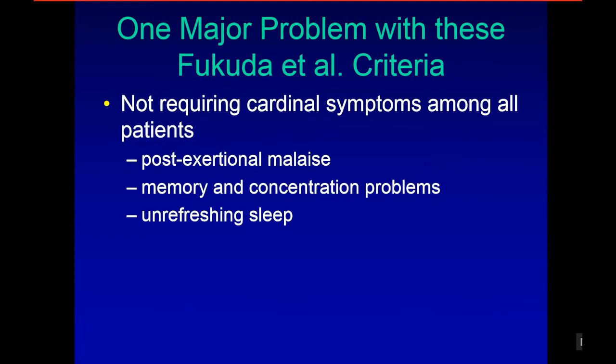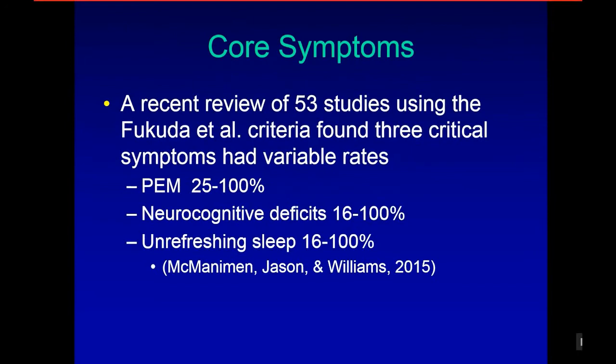By not requiring post-exertional malaise, memory and concentration problems, or unrefreshing sleep, we have significant reliability and validity issues. A recent study of 53 studies using Fukuda criteria found these three critical symptoms at variable rates: PEM from 25 to 100%, neurocognitive deficits from 16 to 100%, unrefreshing sleep from 16 to 100%. This variability is unacceptable for these cardinal key symptoms of ME.